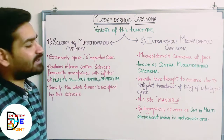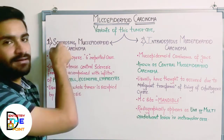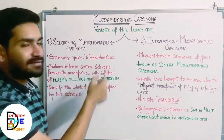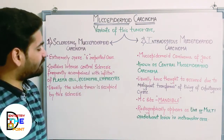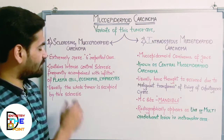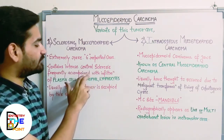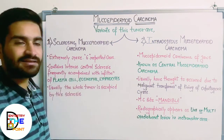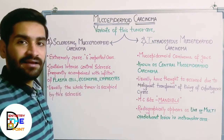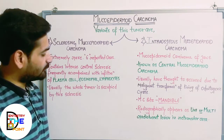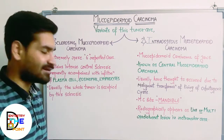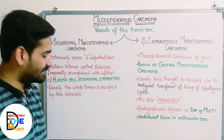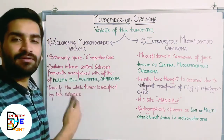Sclerosing mucoepidermoid carcinoma contains intense central sclerosis — as the name suggests. This sclerosis is frequently accompanied with infiltration of plasma cells, eosinophils, and lymphocytes. These three cell types characterize the infiltration pattern seen in this variant.